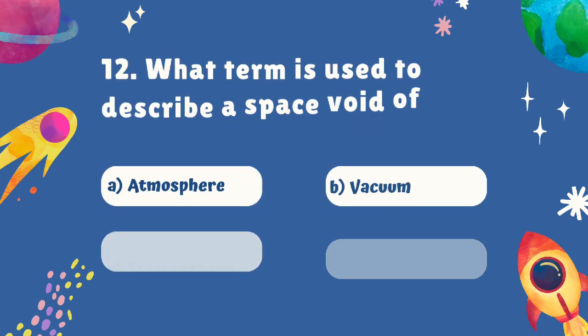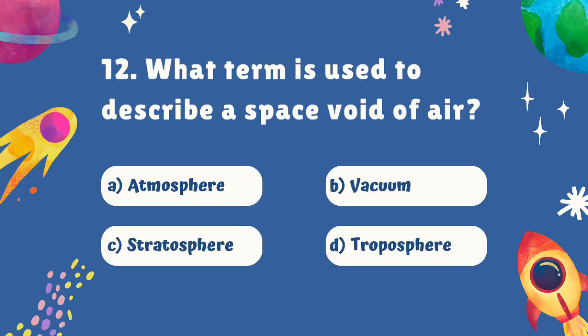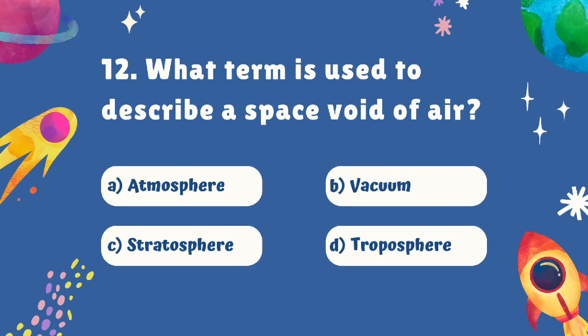Question number twelve. What term is used to describe a space void of air? Is the answer A. Atmosphere, B. Vacuum, C. Stratosphere, or D. Troposphere? The correct answer is B. Vacuum.